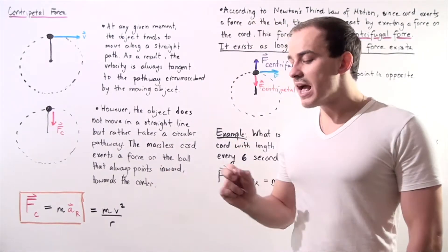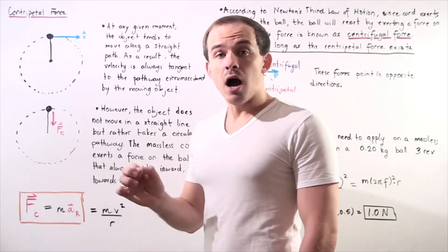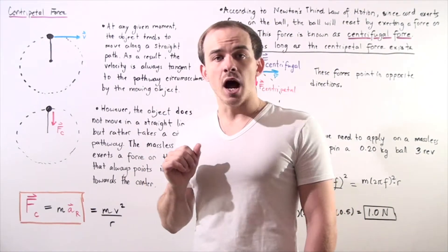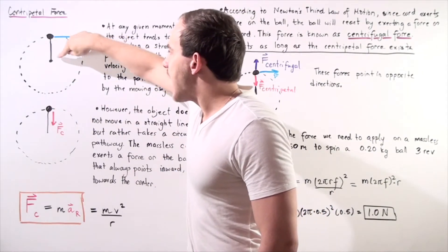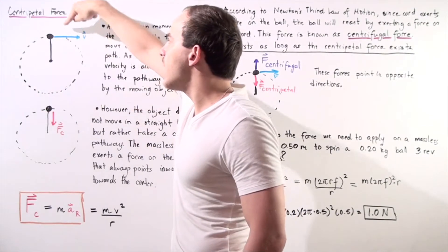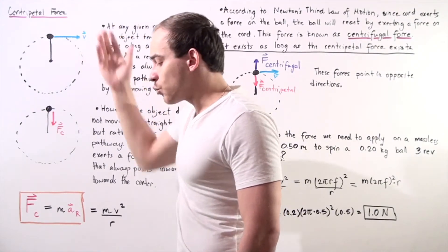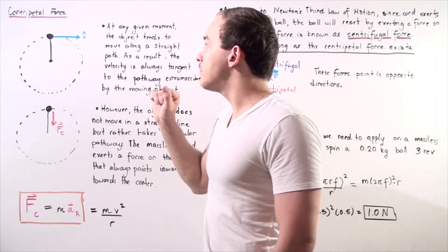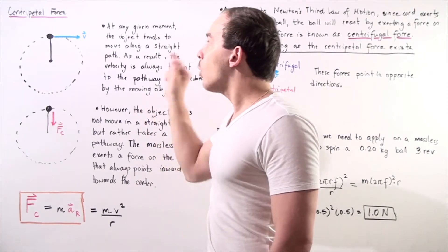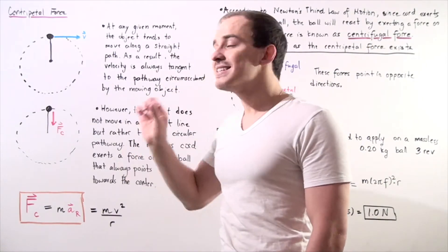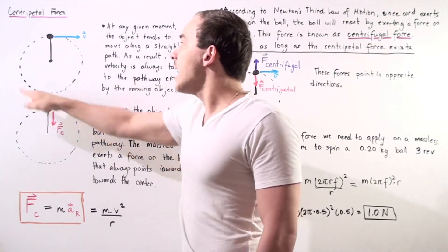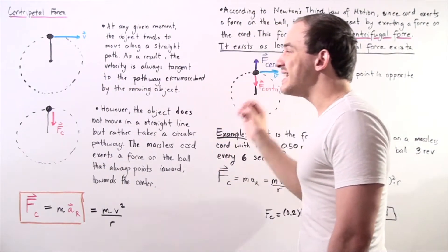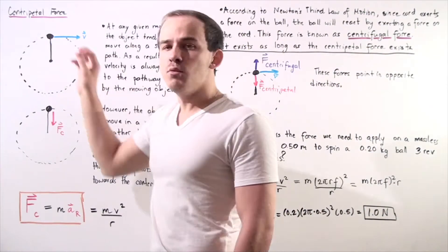What that basically means is that the magnitude of velocity — the speed of our object — remains constant. If we take a snapshot of our object, we get a picture showing the radius of our circular pathway created by our ball, which represents our massless cord. At this given moment in time, the magnitude of velocity is exactly the same as everywhere else, but our direction is unique. The velocity vector points exactly tangent to the pathway created by our moving object.